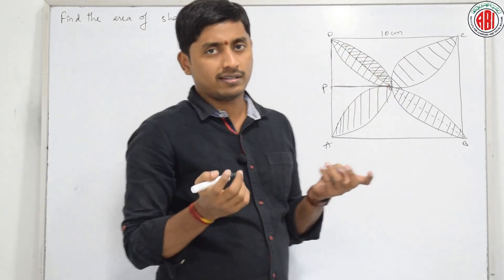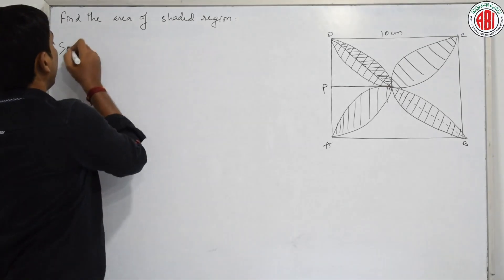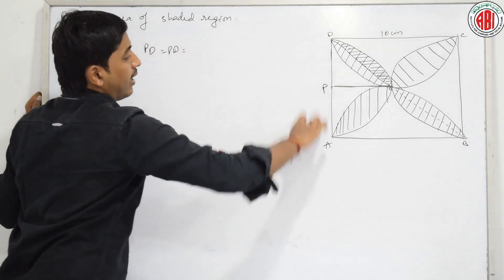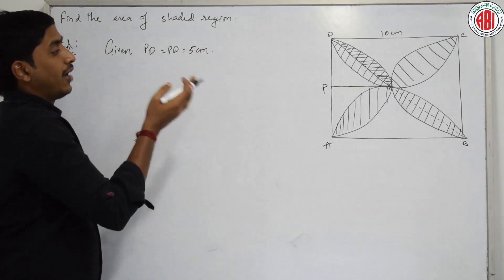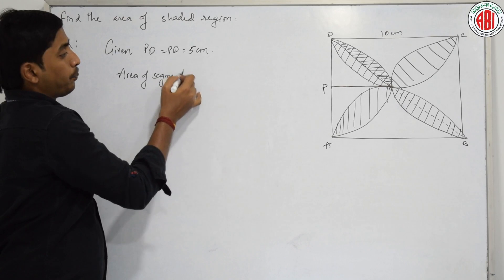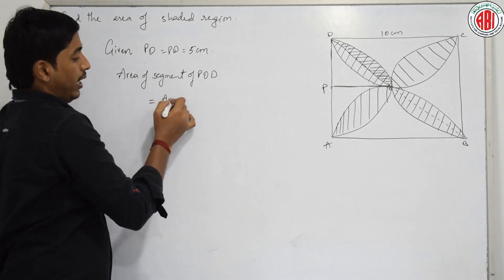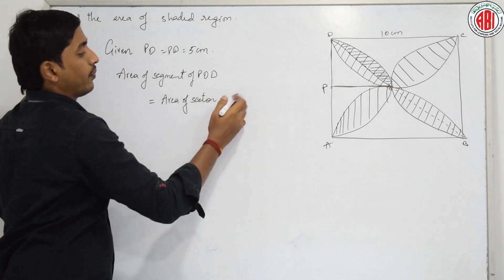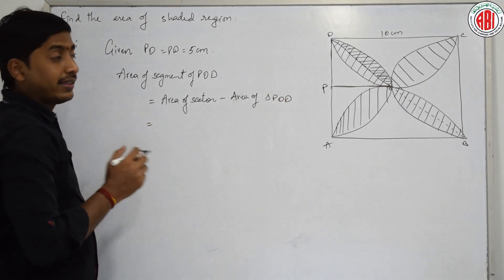After this, we can multiply it by 4. Now how do we find the area of segment here? Let us write the solution. Given PO = PD = 10, so the radius is obviously 5 centimeters. Area of segment POD equals area of sector minus area of triangle POD. What is the area of sector? Theta by 360 into pi R square.